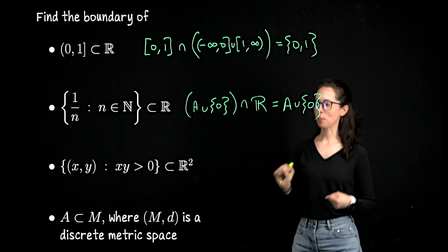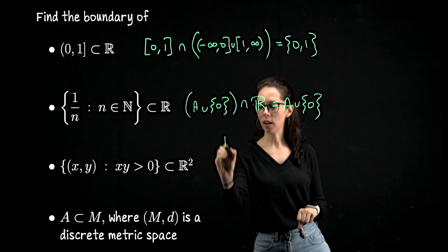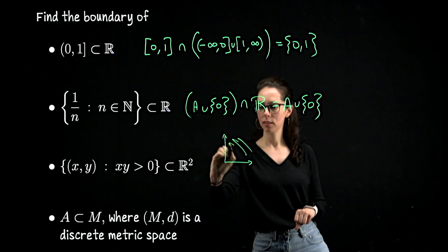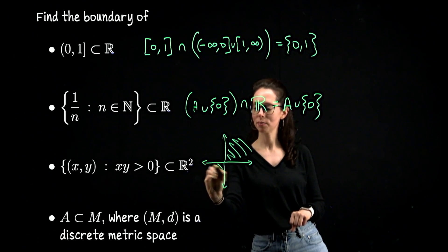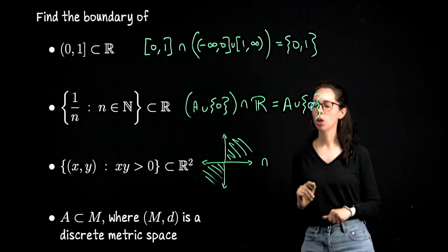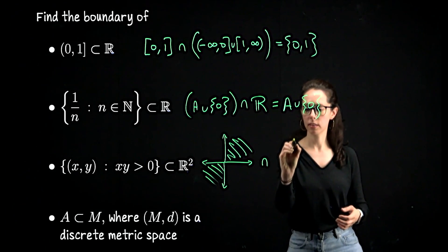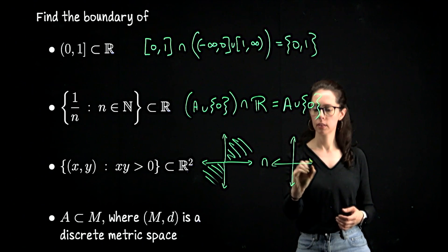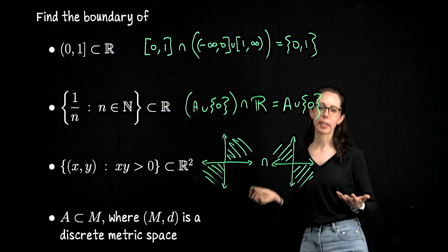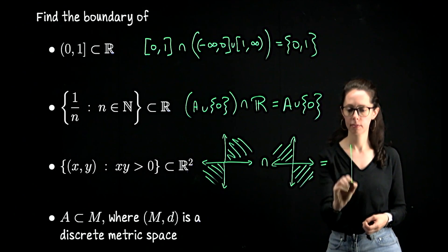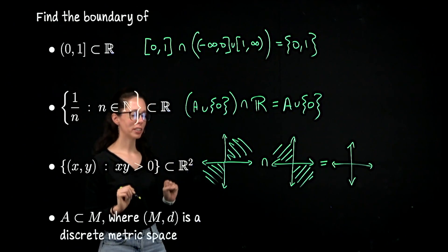For the third one, let me sketch a picture. We have the interior of the first and third quadrants. When we close that off, we get the closed first and third quadrants. The closure of the complement is the axes together with the second and fourth quadrants. What do they have in common? The axes. So that is the boundary for the first and third quadrants drawn in R².